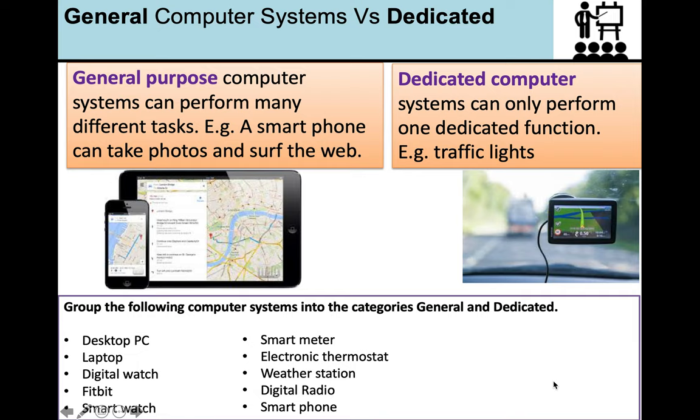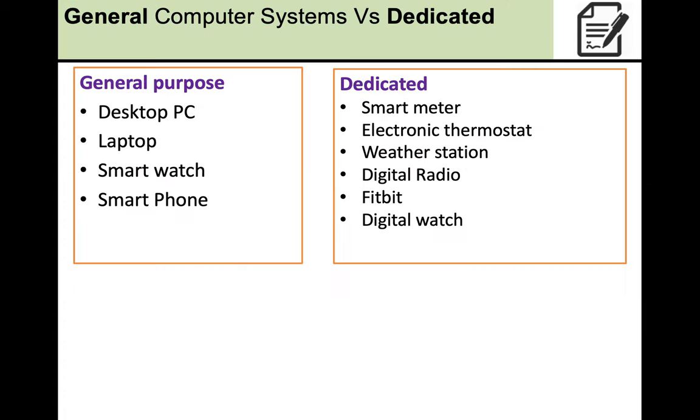So there are a couple of examples of a general purpose computer system. And the other sat-nav that we have on the screen is what we would actually call a dedicated computer system, as it can only perform one dedicated function. So the example in the picture is a sat-nav. The function is it navigates, it allows you to get from A to D while projecting your position on a map. Another example of a dedicated system could be traffic lights, which the process that they are carrying out is switching the lights on and off in sequence on repeat. And at the bottom, we've got a few different examples of general purpose and dedicated systems. And if you'd like, you can pause the video and try and group them together.